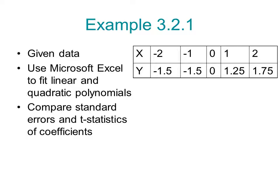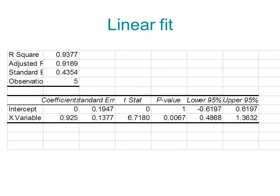So now we'll take an example from the lecture notes that illustrates the use of t-statistics to decide between two models. So we have now only five data points. The function is still y equal to x but we have a lot of noise. So here is the linear fit. The numbers that I would like you to note for comparing with the quadratic fit is that the adjusted r square is 0.917, the standard error is 0.43, the slope is estimated as 0.925 and its t-statistics is 6.7.